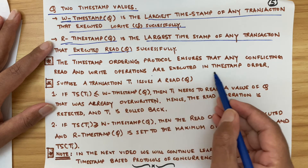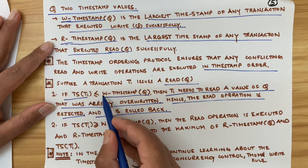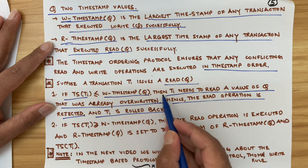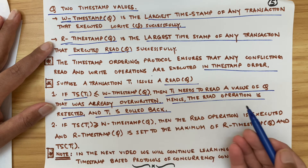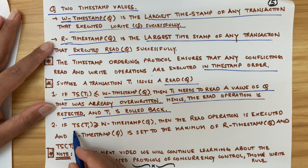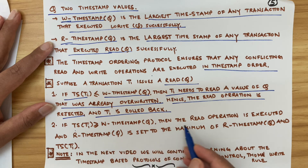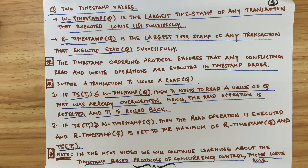The timestamp ordering protocol ensures that any conflicting read and write operations are executed in timestamp order. Suppose a transaction Ti issues a read(Q): if TS(Ti) is less than or equal to W-timestamp(Q), then Ti needs to read a value of Q that was already overwritten, so the read operation is rejected and Ti is rolled back — rolled back means all operations are reversed to restore the original state. If TS(Ti) is greater than W-timestamp(Q), then the read operation is executed and R-timestamp(Q) is set to the maximum of R-timestamp(Q) and TS(Ti). In the next video we will continue learning about timestamp-based protocols of concurrency control.